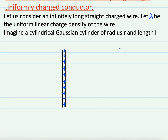Linear charge density means the charge per unit length. The charge per unit length is called the linear charge density of the given wire.